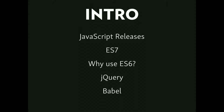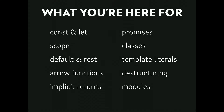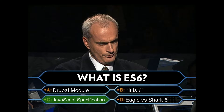So what are we going to be talking about? First, a brief introduction going over JavaScript releases so you know the history. Then we're going to go into ES7 before we even talk about ES6 — there's a reason. Then we'll ask why use ES6, touch on jQuery and Babel, and then dive into the awesome features of ES6: const/let, scope, default and rest, arrow functions, implicit returns, and more.